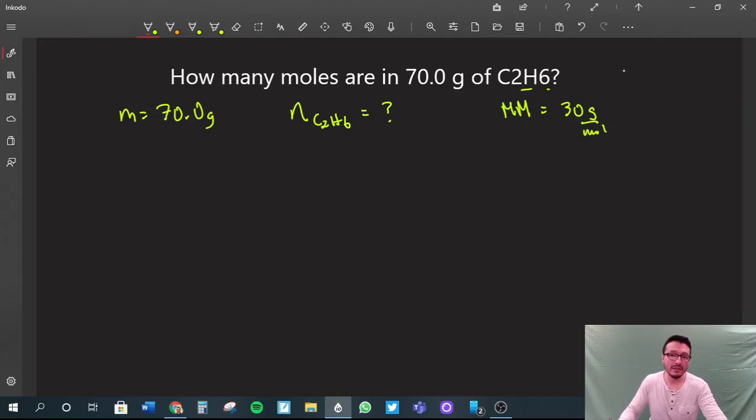We're going to plug it into the factor label method's generic template. So we need moles of C2H6. We are given—the question gives us mass—so it's 70.0 grams.